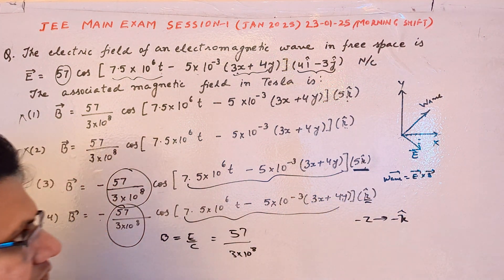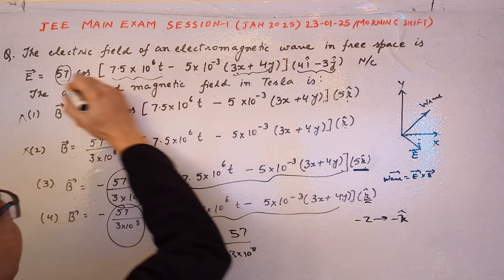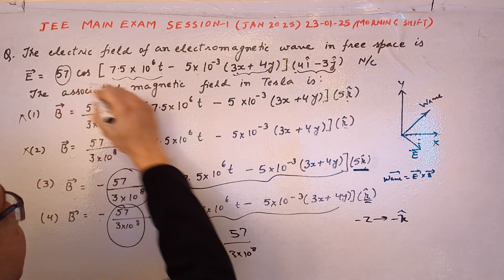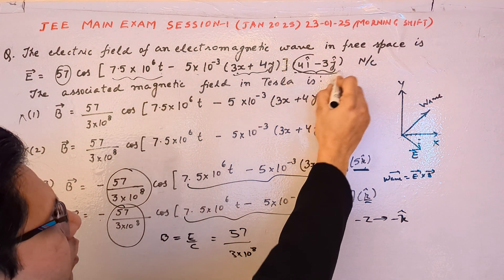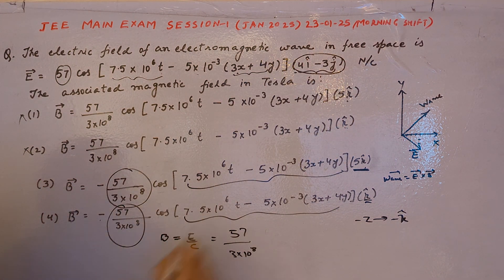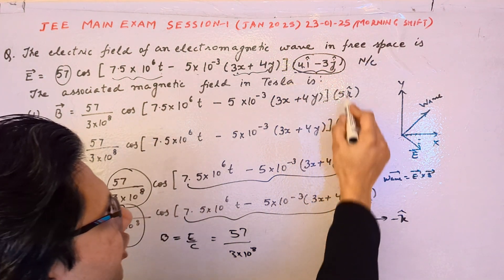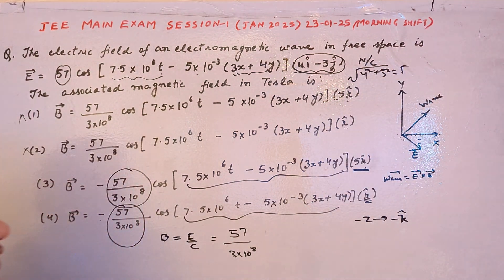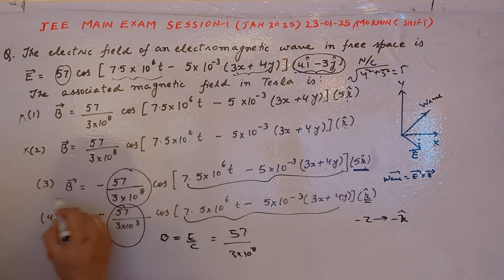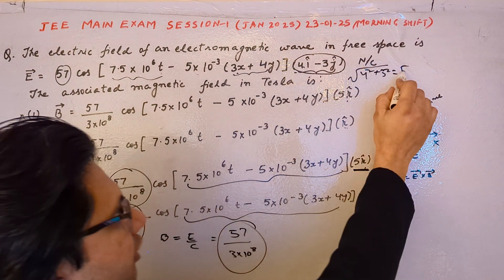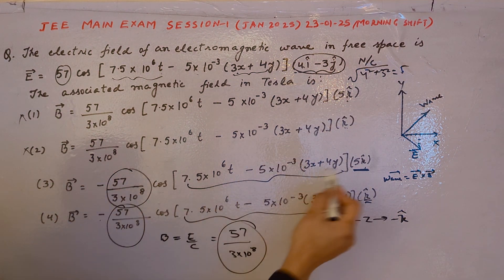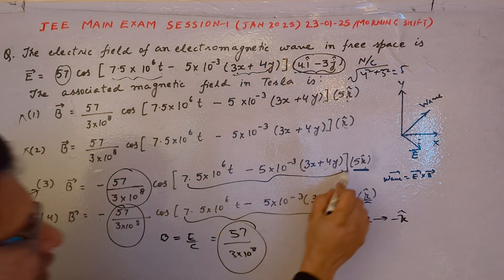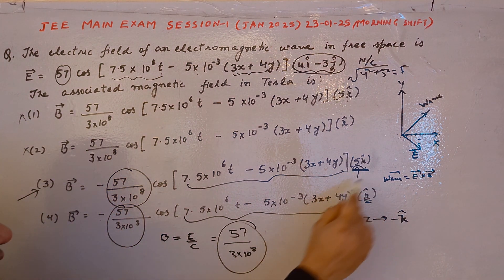From the given expression of the electric field, the electric field vector is 4i minus 3j. The magnitude of this vector is √(4² + 3²) = √(16 + 9) = √25 = 5. So the magnitude of the magnetic field must also contain this factor of 5. This 5 must be multiplied into the expression, and according to the given options, option three contains this factor of 5. Therefore, option three is the correct answer.